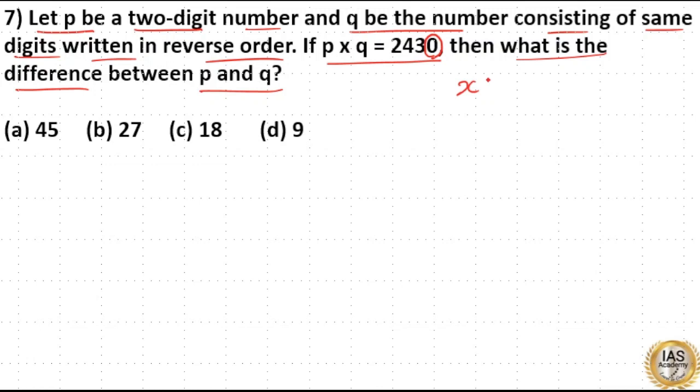Here, 0 is not an option. If you take one number as x0, you cannot take the other number as 0x because both are two-digit numbers. So 0 is not an option. Now, if you take 5 as the unit place,